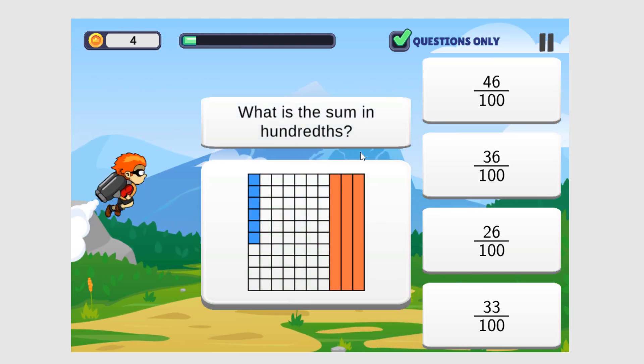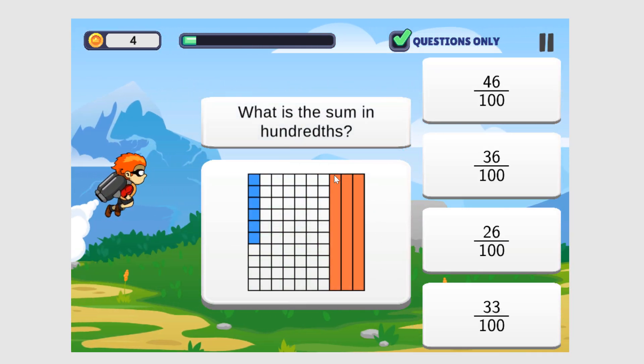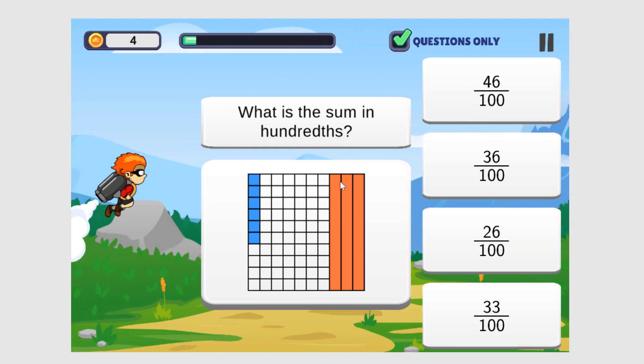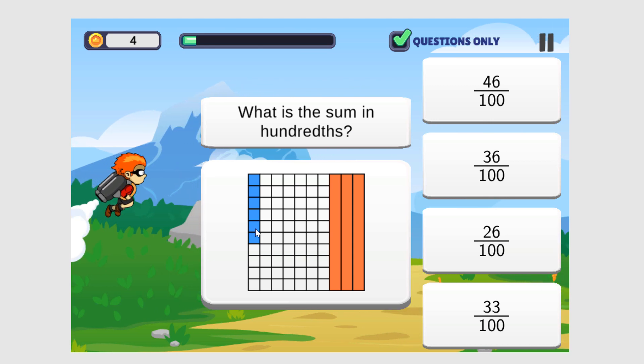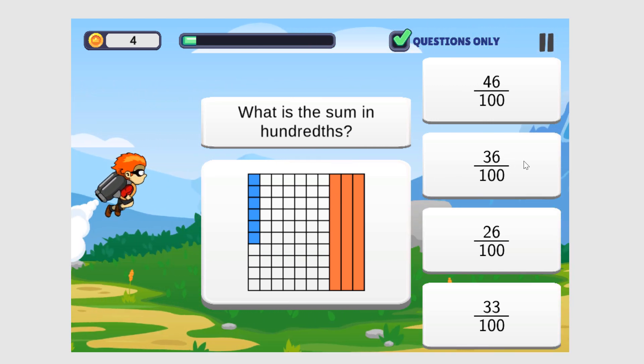So in this block we have three tenths, which would be thirty hundredths plus six. So the thirty plus six is thirty-six hundredths. Right here.